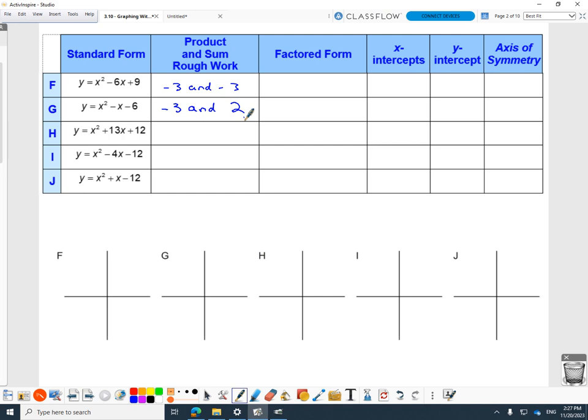The ones with all positives are a little easier. What multiplies together to give 12, but adds together to give 13.